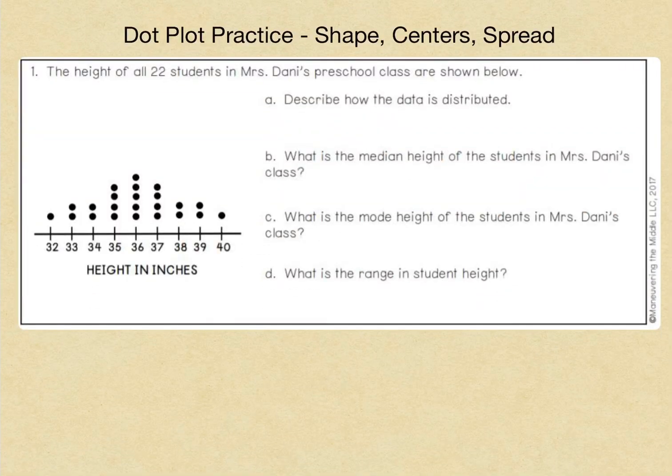Now getting to our practice, we're going to ask you four questions on the shape, centers, and spread of this dot plot. The height of all 22 students in Mrs. Danny's preschool class are shown below. First question, A. Describe how the data is distributed.